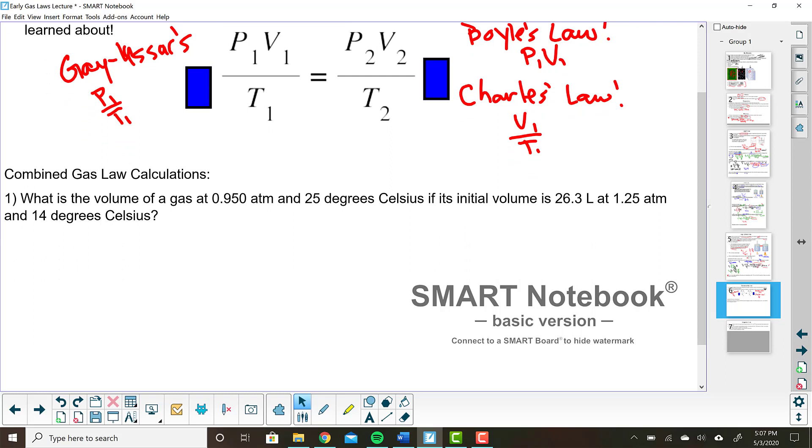The question says, what is the volume of a gas at 0.950 atmospheres and 25 degrees Celsius? Oh, it says degrees Celsius. I'm not even going to read the rest of the question. I'm just going to convert it right now. You take 25 plus 273 and that gives us 298 Kelvin. Okay. So what is the volume of gas at 0.950 atmospheres and 25 degrees Celsius? If its initial volume is 26.3 liters at 1.25 atmospheres and 14 degrees Celsius. Oh, I've got another degree Celsius. 14 plus 273 equals 287 Kelvin.